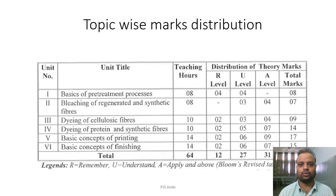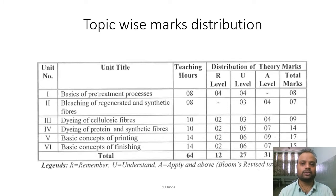Topic-wise marks distribution can be found in your syllabus. In this course you will learn six different units; the names of those are in front of your screen. Each unit has a certain number of teaching hours allotted. The total hours required to complete the whole syllabus — all six units — is 64 hours. Similarly, each individual unit carries certain marks based on its importance or weightage, with a total of 70 marks distributed amongst the six units. You can find the marks allotted for each unit in the last column.